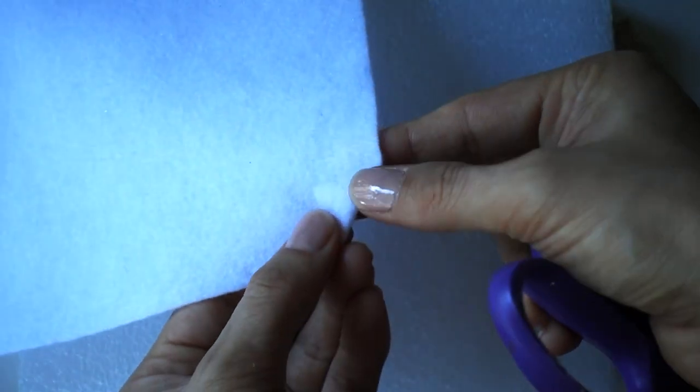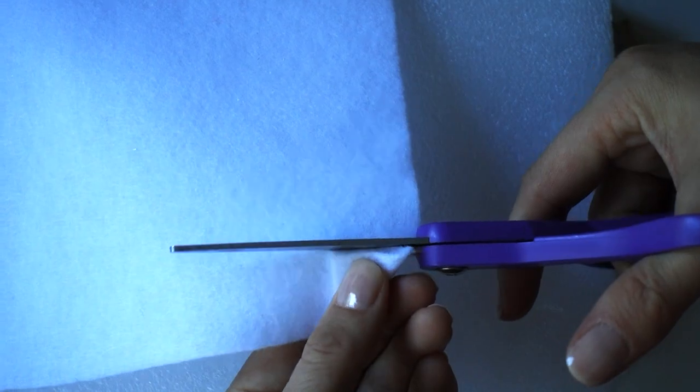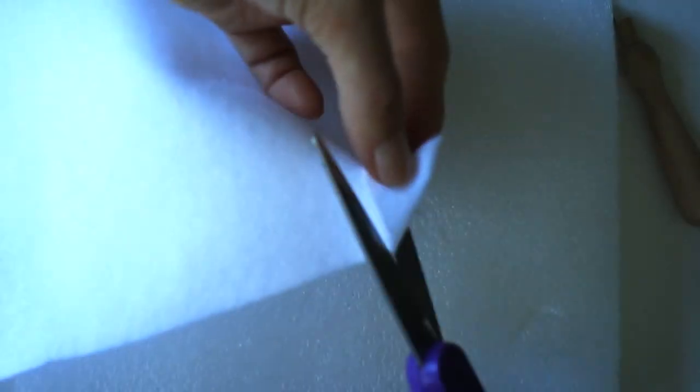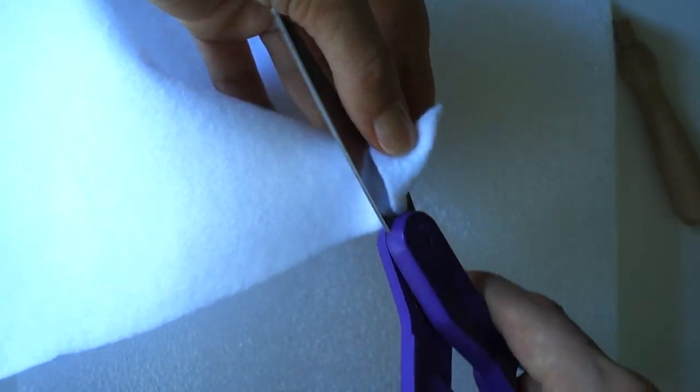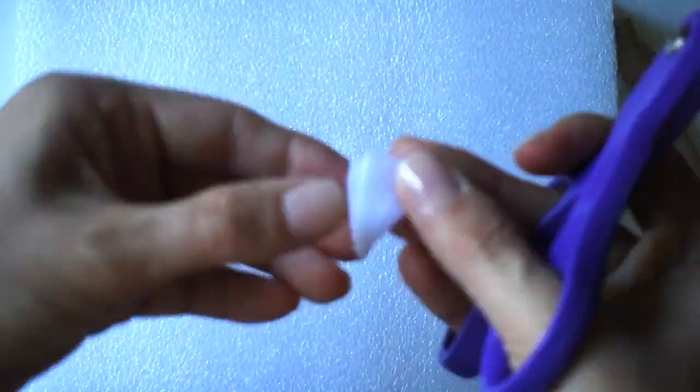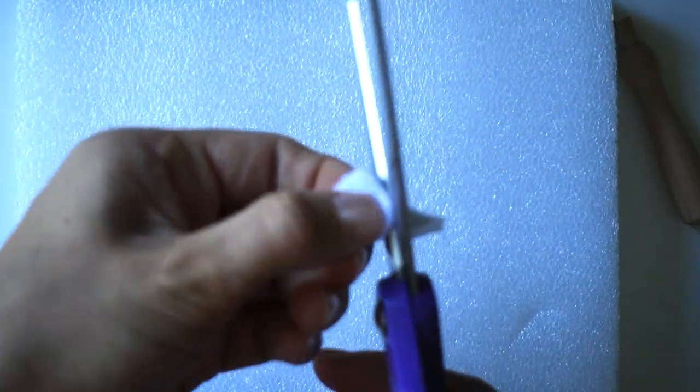To create the ears I'm cutting out a square, which I will cut into two identical triangles. Then I'm cutting out teardrop shapes out of the triangles.